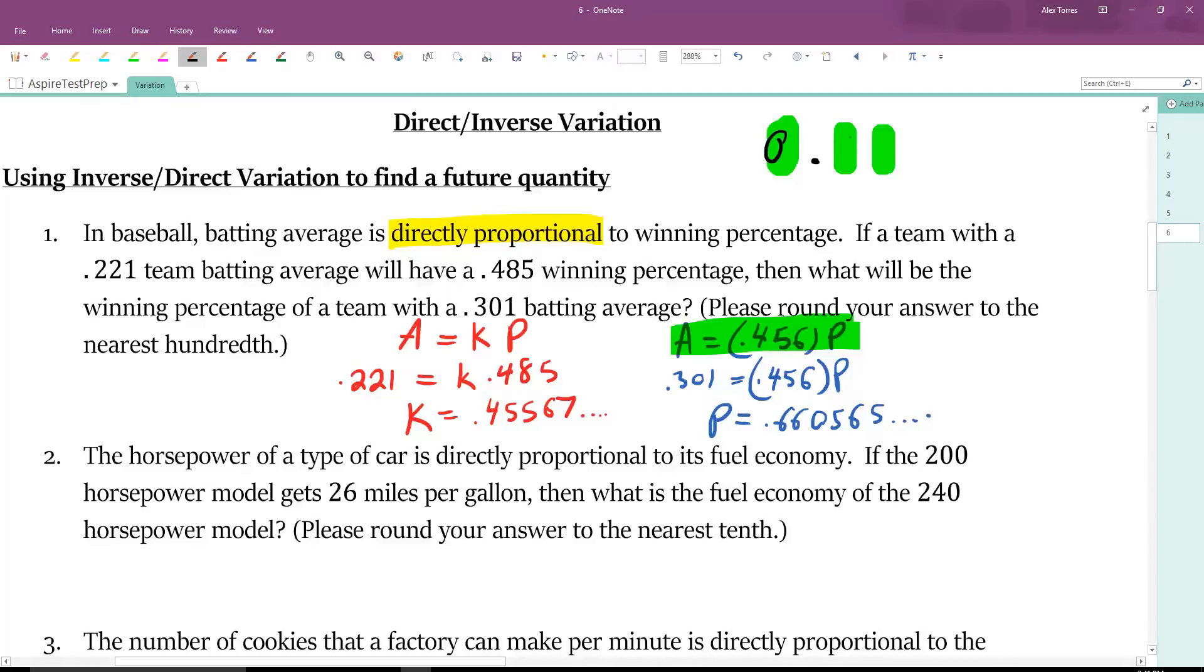So, fitting our number into that, we've got 0.660565. To round to this number right here, we need to look at the next number. If it's five or greater, we go up. If it's four or less, we stay where it is. Then we're staying where it is, and the answer is 0.66 for number one.